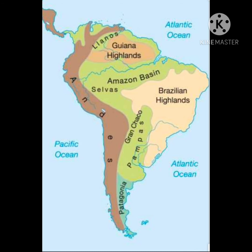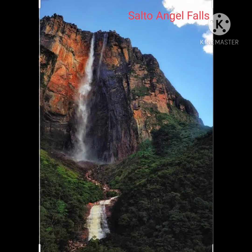The Guiana highlands are located to the north of the Amazon, or in the east of Llanos. These highlands are lower than the Brazilian highlands — their height is comparatively lower than both the Brazilian highlands and the Andes.